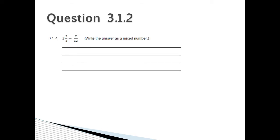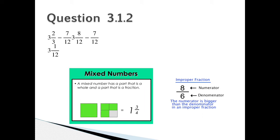Question 3.1.2: 3 and 2 over 3 minus 7 over 12. Write the answer as a mixed number. Question 3.1.2: Remember that mixed numbers has a part that is a whole and a part that is a fraction. An improper fraction: the numerator would be bigger than the denominator. Therefore it is an improper fraction. So the answer for our question is 3 and 2 over 3 minus 7 over 12 is equal to 3 and 8 over 12 minus 7 over 12, which will give you 3 and 1 over 12.